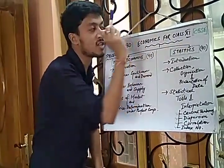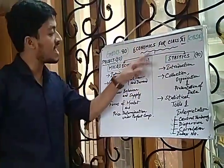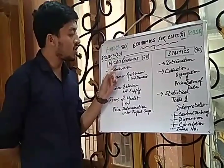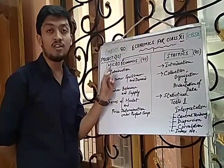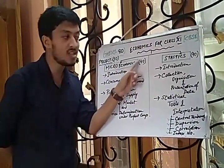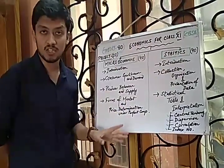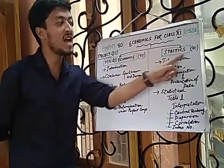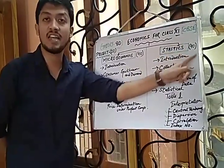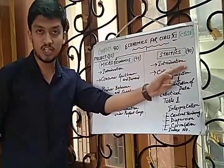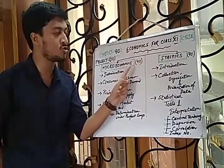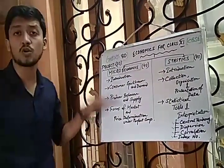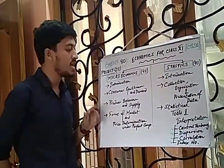The entire Class 11 Economics for CBSE is now divided into two parts: Microeconomics as the first part, and Statistics as the second part. Microeconomics is worth 40 marks and Statistics is again 40 marks — so the 80 marks of theory is equally divided, 40 and 40.